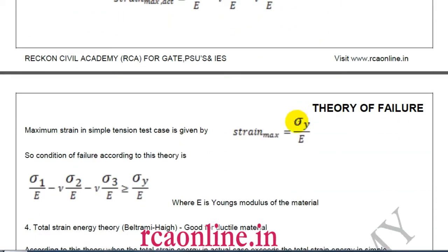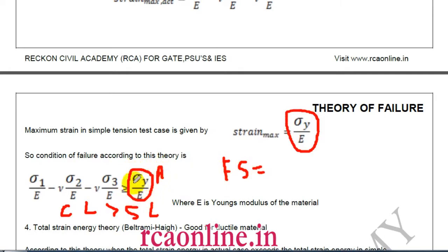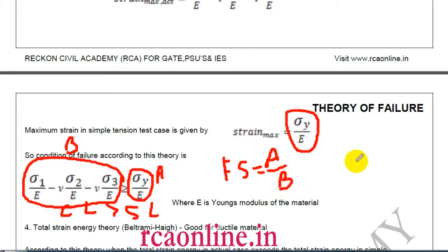In simple loading, the maximum strain is sigma y / E. The failure criterion: if the complex loading strain exceeds the simple loading strain, failure takes place; if it is less, there is no failure. The factor of safety is the simple test strain (sigma y/E) divided by the complex loading strain — same principle as the previous two theories.